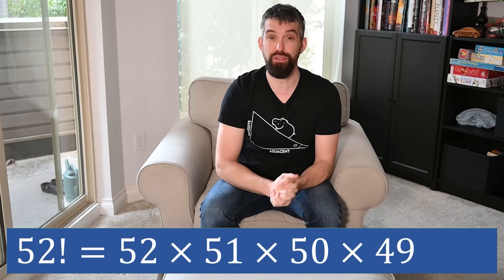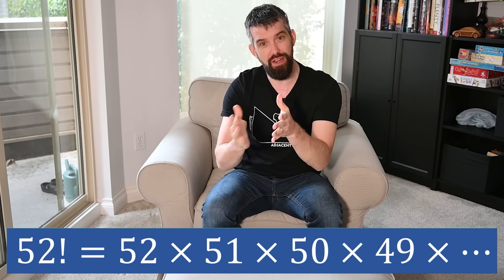The number of possible orderings of a deck of cards is 52 factorial. 52 options for the first card, 51 for the second, 50 and so forth. And 52 factorial, about 10 to the 68, is an incredibly large number.